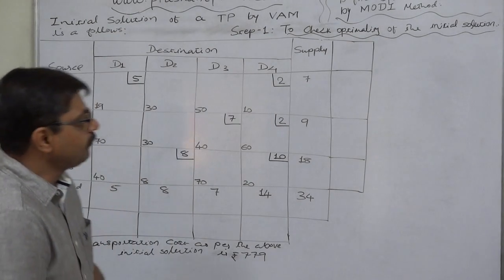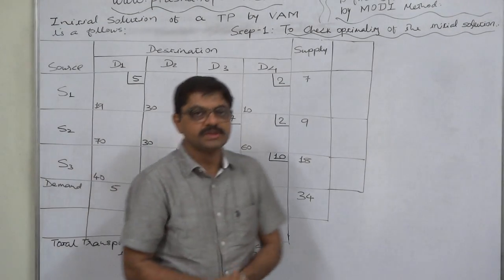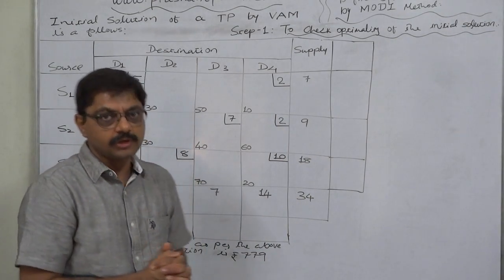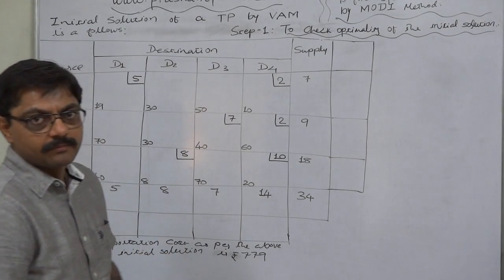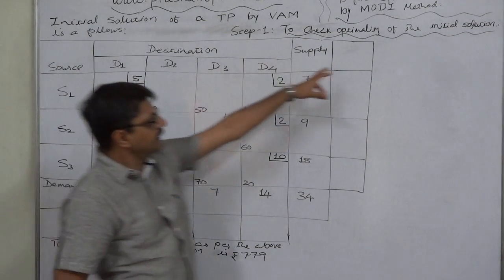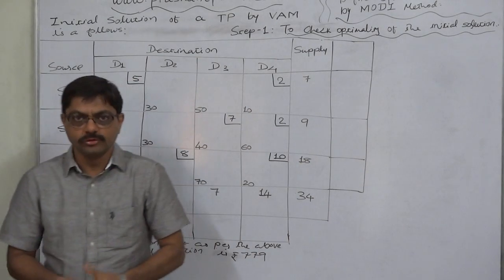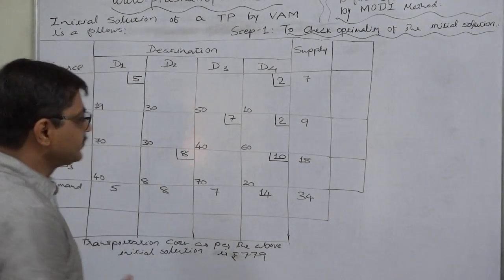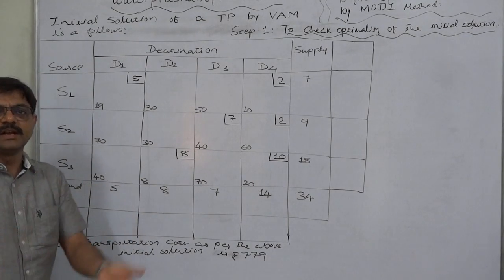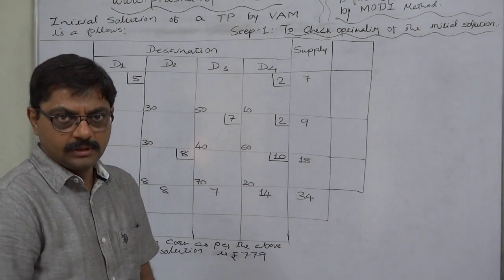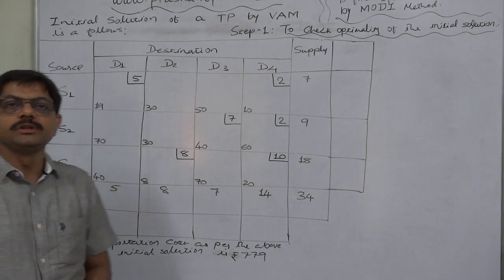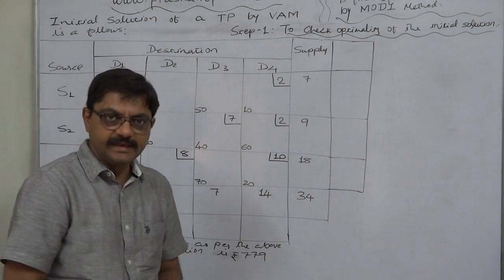Now we want to get the optimal solution of the same problem. There are a few steps. The first step is to check the optimality of the initial solution — that means we first check whether the initial solution itself is optimal or not. For that purpose we have to calculate opportunity cost Dij.